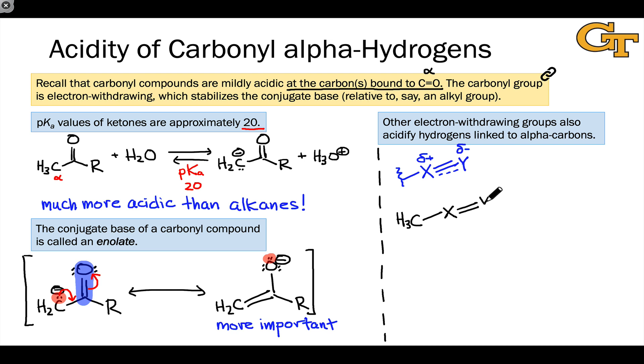Now Y is relatively electronegative. This means that it can stabilize negative charge fairly well. So when we deprotonate the CH3 group, we end up with a conjugate base that's well stabilized by resonance.